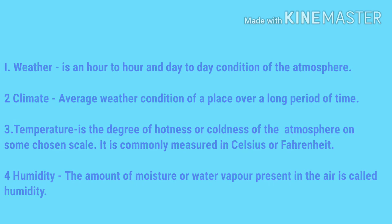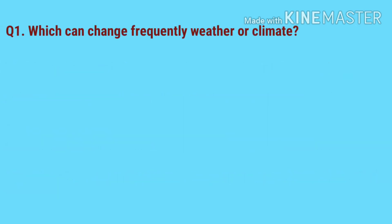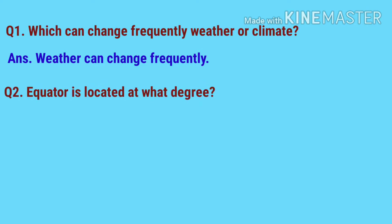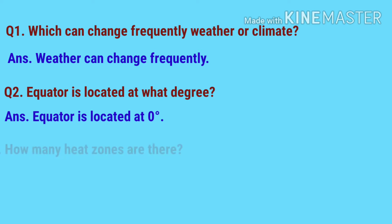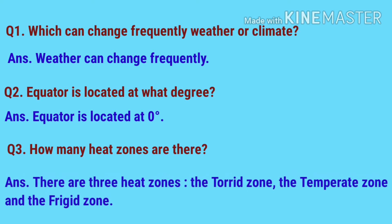Question number one: which can change frequently — weather or climate? The answer is weather can change frequently. Question number two: the equator is located at what degree? The equator is located at zero degree. Question number three: how many heat zones are there? There are three heat zones — the torrid zone, the temperate zone, and the frigid zone.